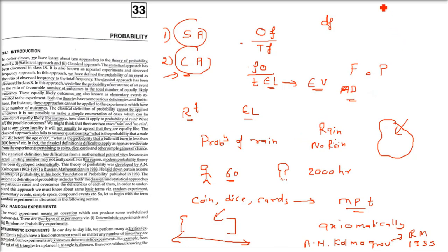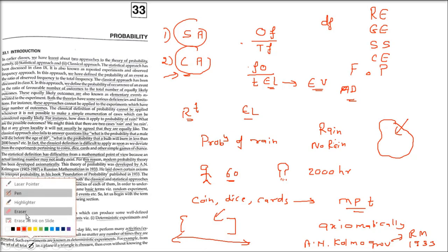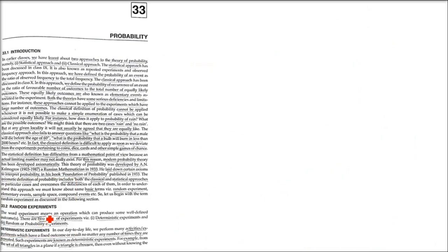In order to understand this axiomatic approach, we must know some basic terms — for example, random experiment, elementary events, sample space, compound events, and more. So let us begin with the term random experiment and then we will try to understand this axiomatic way of approach.